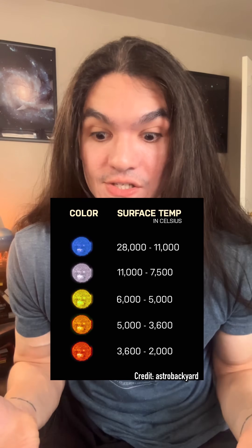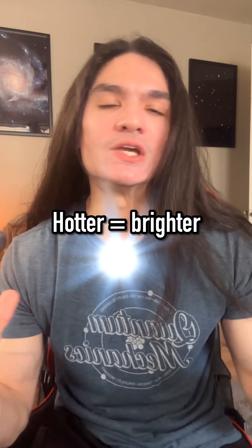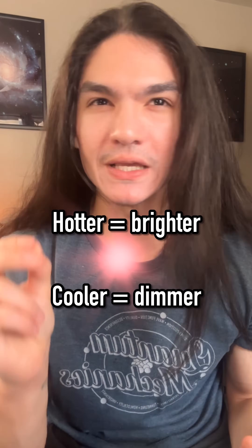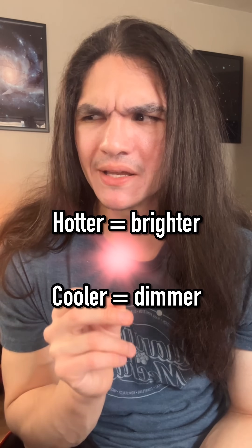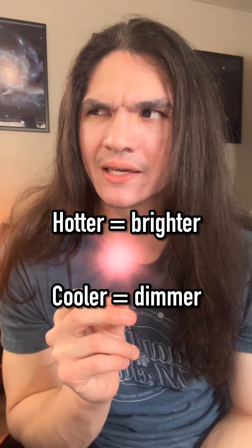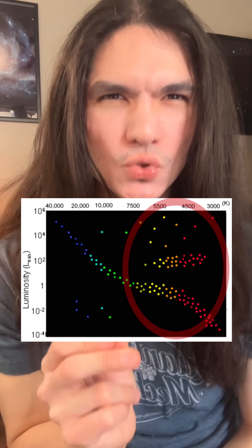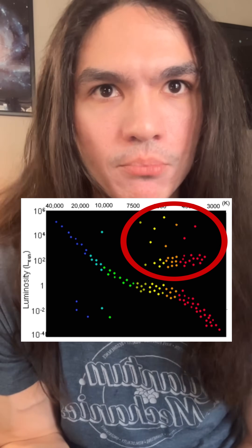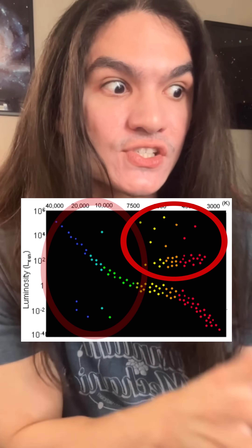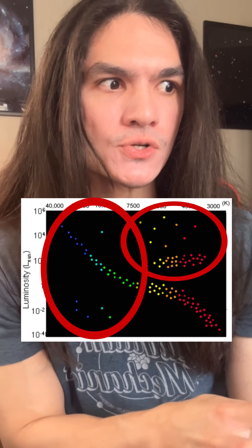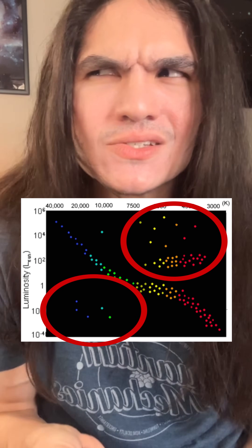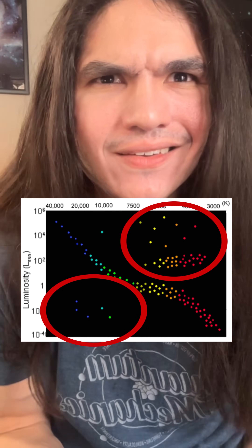This might be counterintuitive, but the bluer a star is, the hotter it is, and the redder, the cooler. So in most cases, hotter equals brighter and cooler equals dimmer. But interestingly, some cool stars are insanely bright, and some hot stars are really, really dim. So what's the deal?